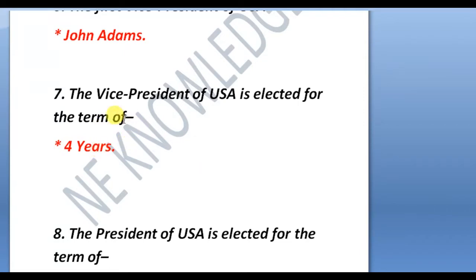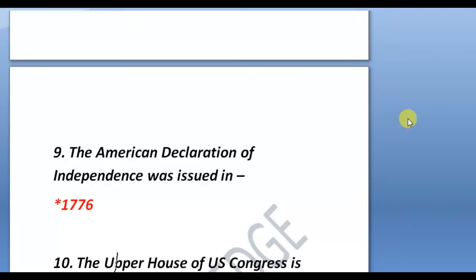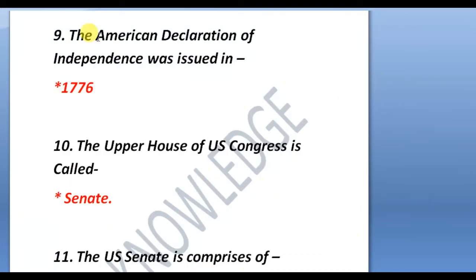Both the Vice President and the President are elected for a term of four years, but in India it is five years. The President of the USA is also elected for a term of four years. The American Declaration of Independence was issued in 1776.